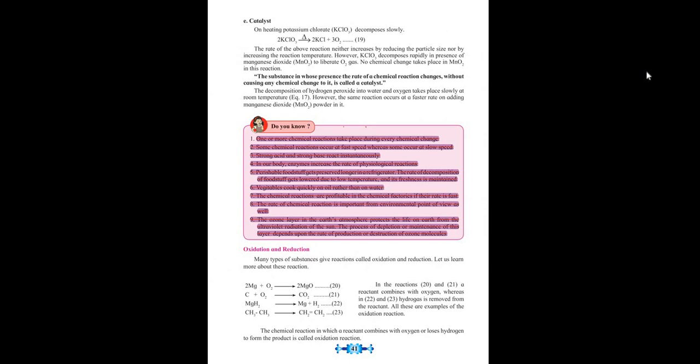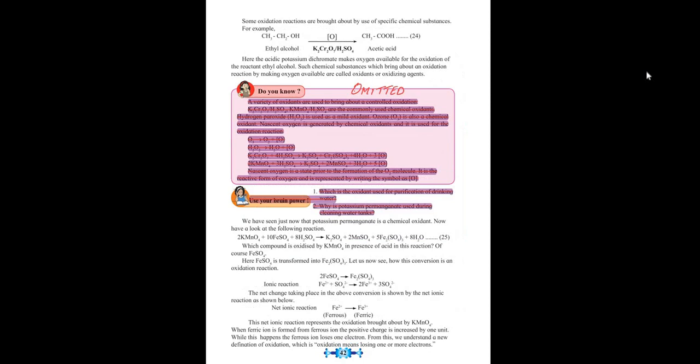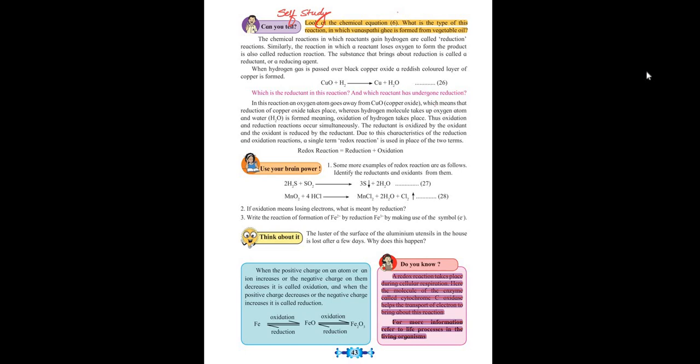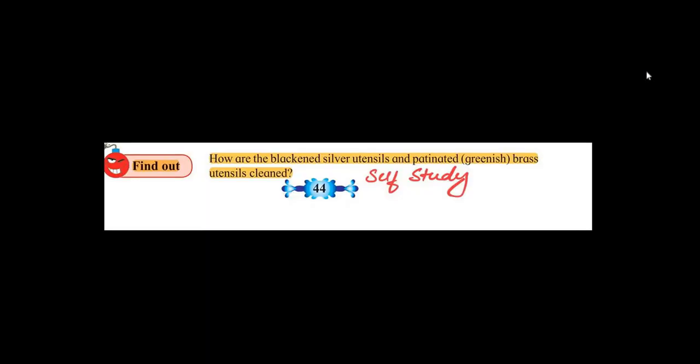Page number 41: entire 'Do You Know' section stands to be omitted. Page number 42: 'Do You Know' section omitted, 'Use Your Brain Power' omitted. Nearly 50 percent of your portion has just been scrapped due to pandemic. Page number 43: the upper part of the page, 'Can You Tell', is for self-study, whereas the 'Do You Know' section has been completely omitted for the current year.